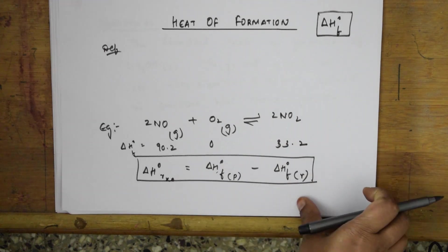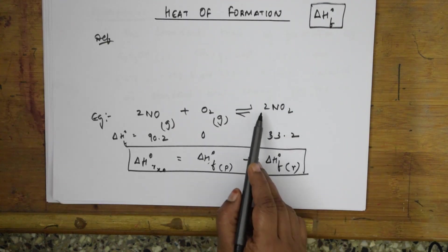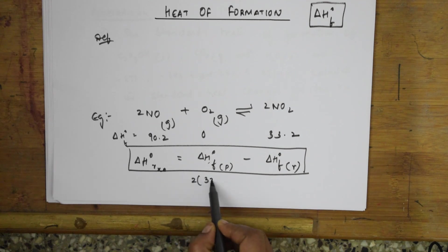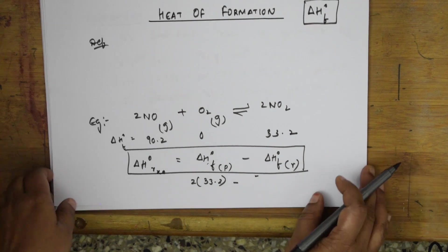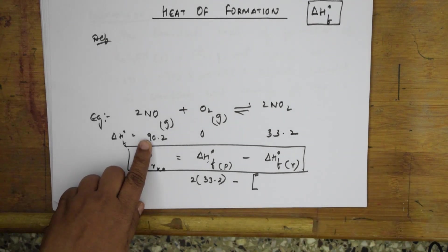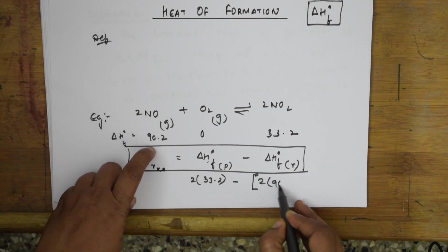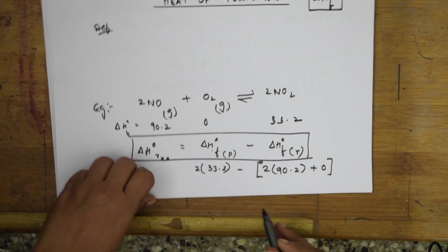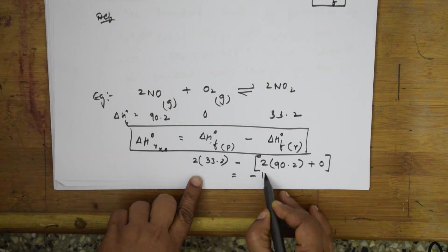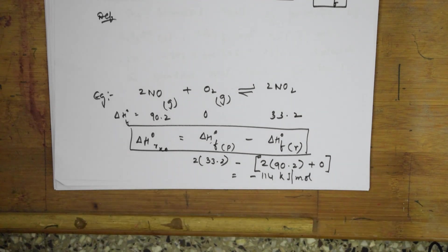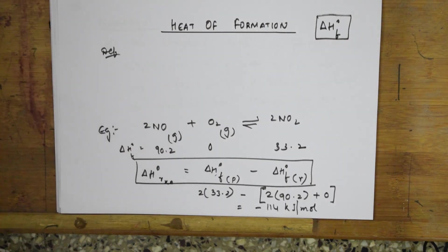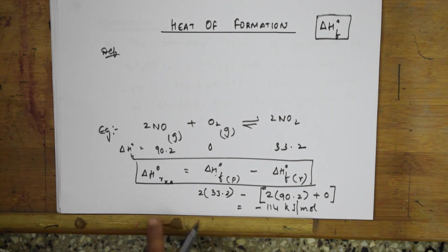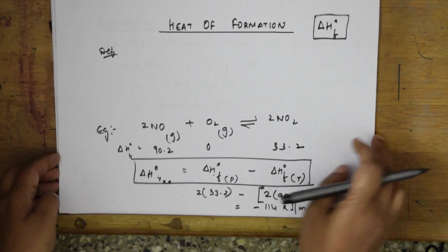How much is the formation of the products? It is 2 into 33.2. Minus of the reactants: 2 into 90.2 plus 0. This comes up to minus 1114 kilojoules per mole. So, from the heat of formation values, I calculated the heat of reaction. Heat of reaction equals heat of formation of products minus heat of formation of reactants.